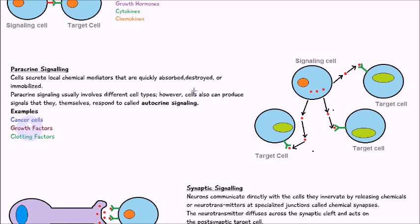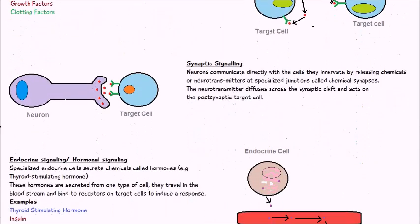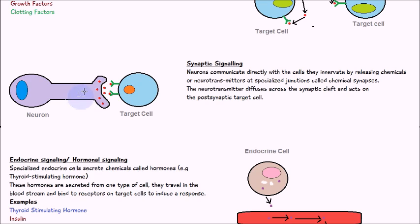Another type of signaling is synaptic signaling, where a neuron releases a neurotransmitter into the synaptic cleft and it binds onto the target cell. These junctions are called synapses. The neurotransmitters or signaling molecules are stored in vesicles on the neuron side and are released into the synapse, then bind onto receptors on the target cell once activated by an action potential.